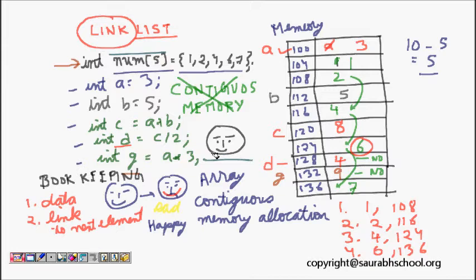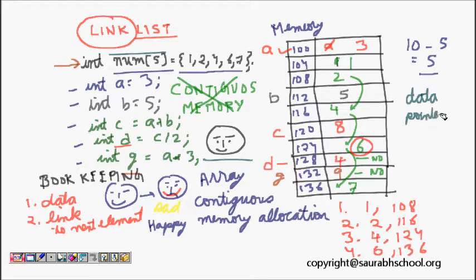Why it worked is because in a linked list, a typical node contains both the data part and a pointer to the next element. We will see this now in a clean way, also as a revision.